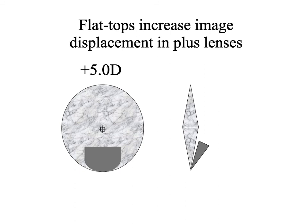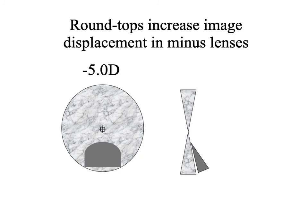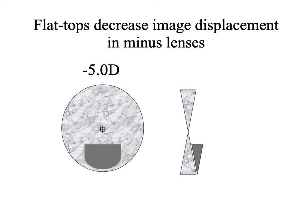For a myopic patient, we do not want a round top. We do want a flat top in a myopic patient. Image jump depends entirely on the bifocal type — if it's a round top, it's high image jump regardless of whether the underlying lens is myopic, plano, or hyperopic. Image jump is something the patient has to deal with. Image displacement is what we attempt to minimize.